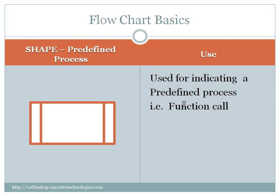And this is a predefined process — it can be a function. So you will be calling a function. When you call a function from a main function or any other function, you can represent the function call using this block. This is called a predefined process. It's a process defined separately in your program, and if you want to call that predefined process, you will be using this block to represent it.